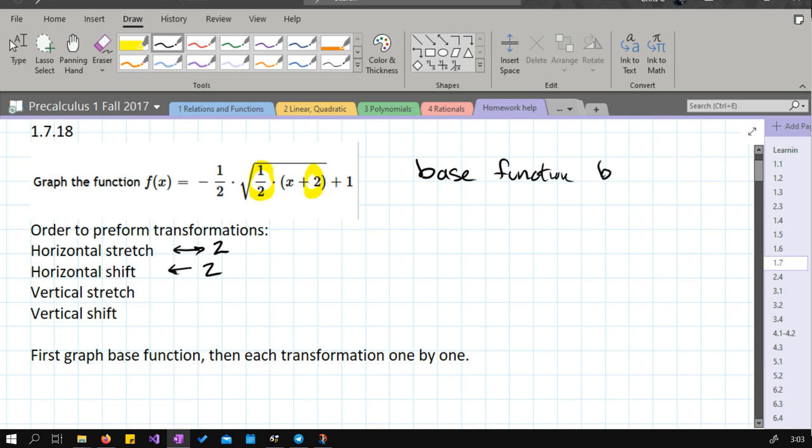I like to use b of x for the base function, b for base. And we need to know what the graph of the square root function looks like. We'll graph that in a minute. But that was in the last section. And then we'll perform these transformations. So we're almost done with transformations.